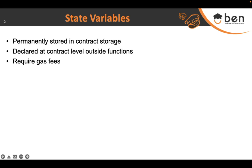Since state variables are stored on the blockchain, they are expensive as they require gas fees. You have to be very careful as a Solidity engineer about the number of state variables you use, because it's always tempting to store all information on-chain — but that comes at a price, as saving anything on the blockchain incurs a transaction or gas fee.